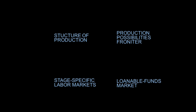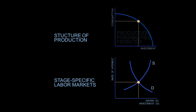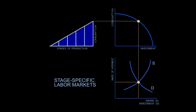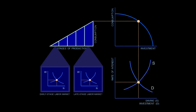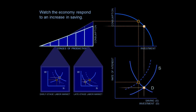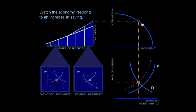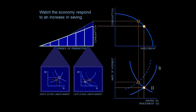So there are all the different graphics: the loanable funds market, production possibilities frontier, structure of production, and stage-specific labor markets. You see how they're all tied together. Now we can see all at once what happens when people decide to save more. You can look around the diagrams and know exactly how things are going to work in a coordinated way. Savings increases, moving along the frontier, reshaping the structure of production, and creating the wage rate gradient. That's the way it works. We've now reached the end of the first part of the lecture — I've shown you how things can work right if markets are allowed to work.